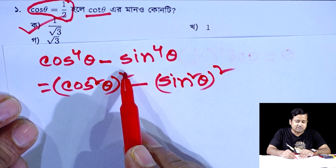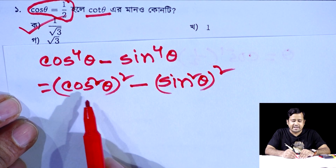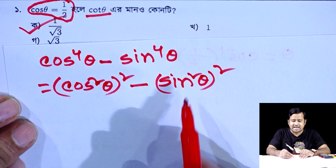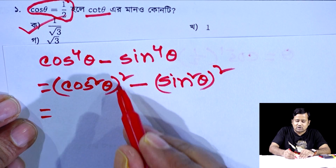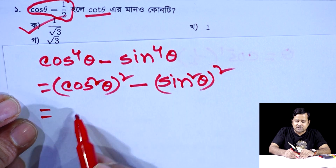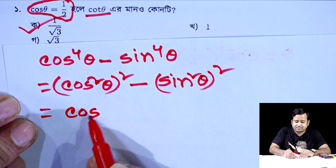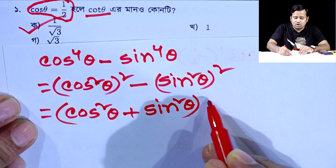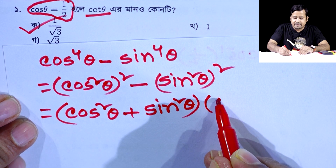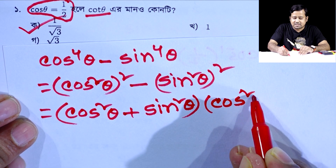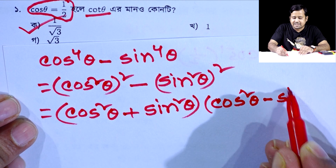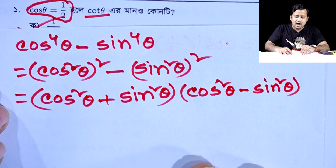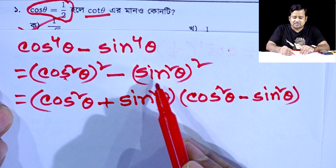We have a square minus b square form with sin to the fourth theta. The rule is: a square minus b square equals (a plus b) into (a minus b). Here, a equals cos squared theta and b equals sin squared theta.